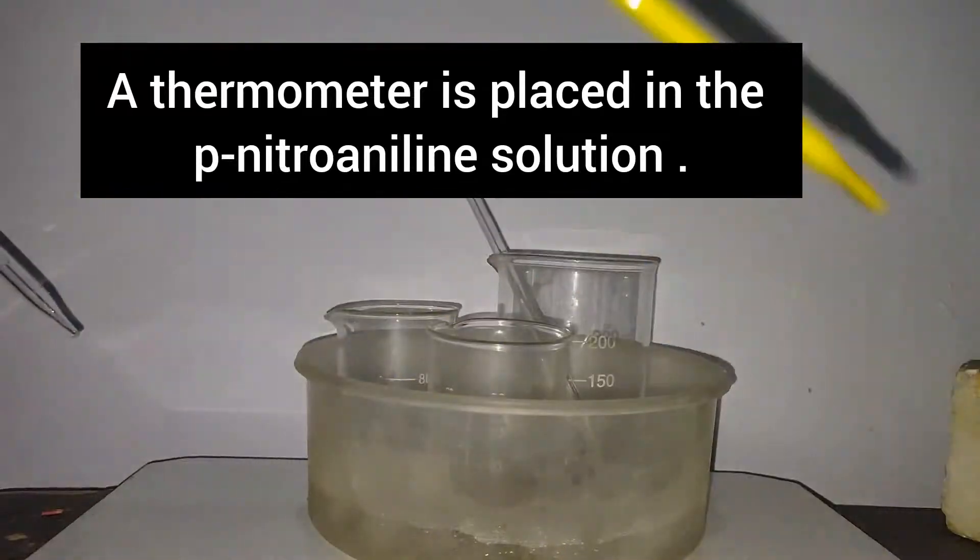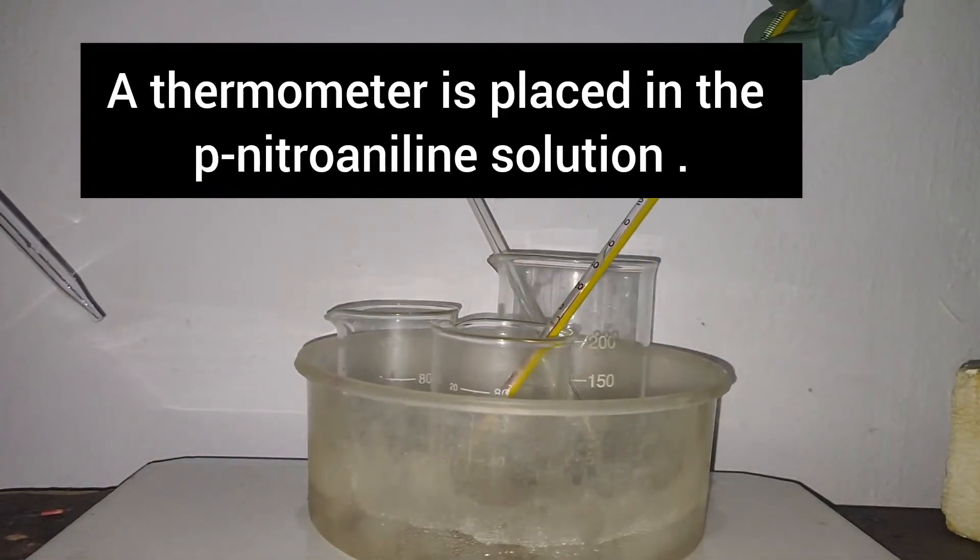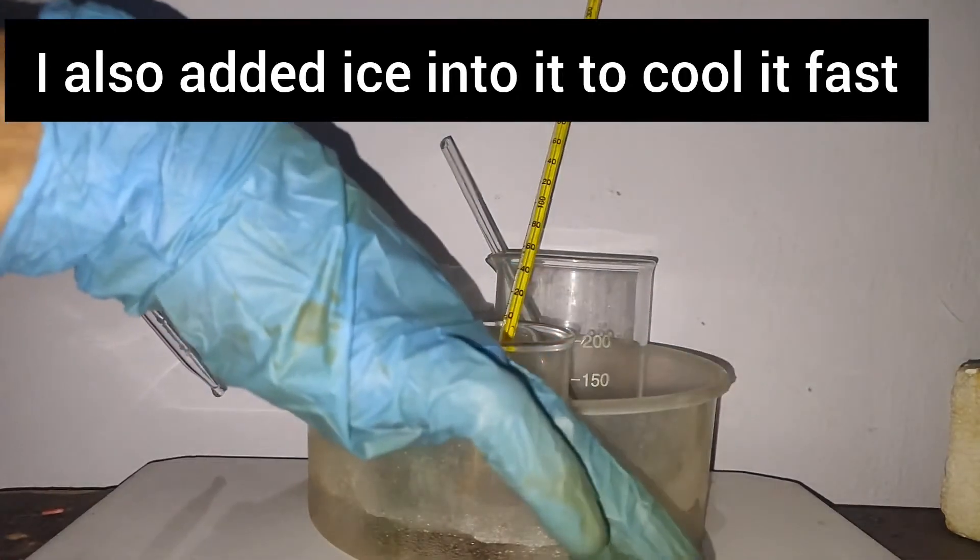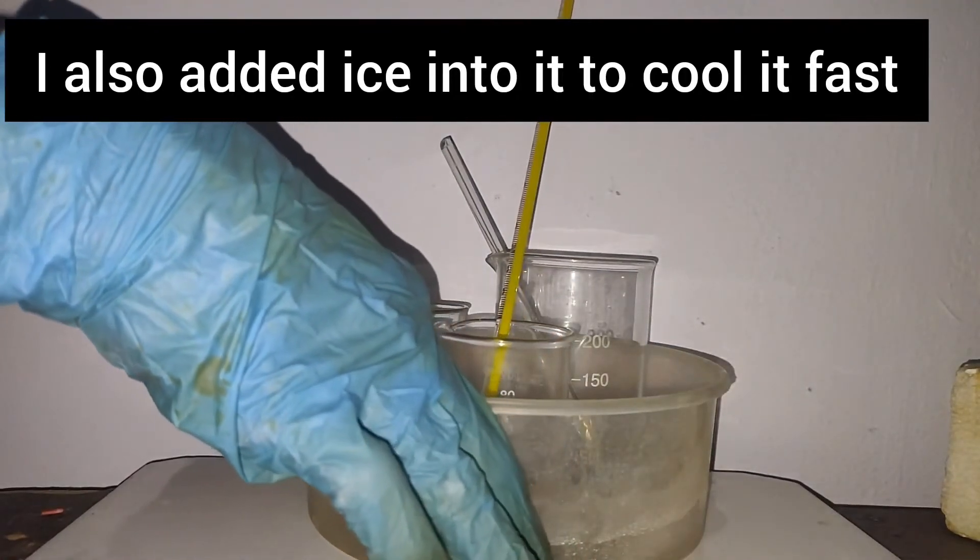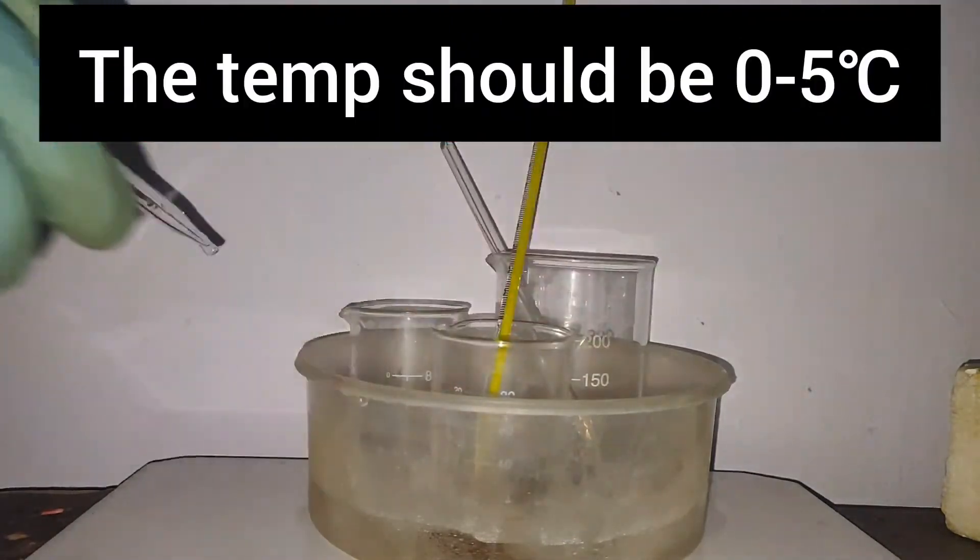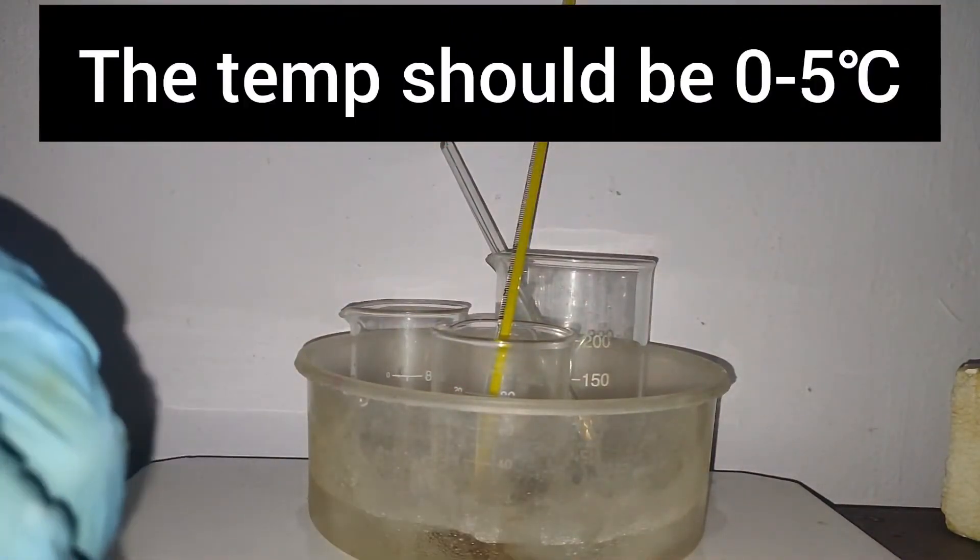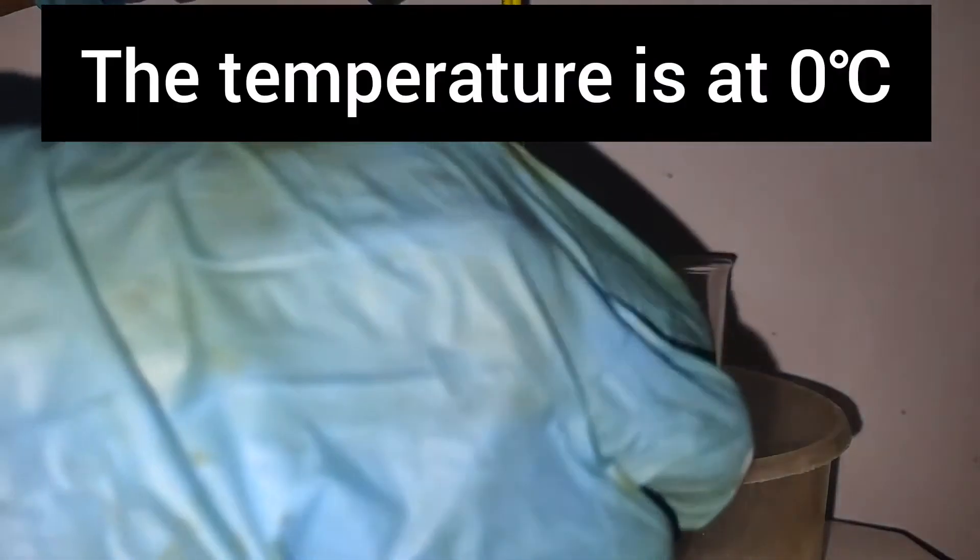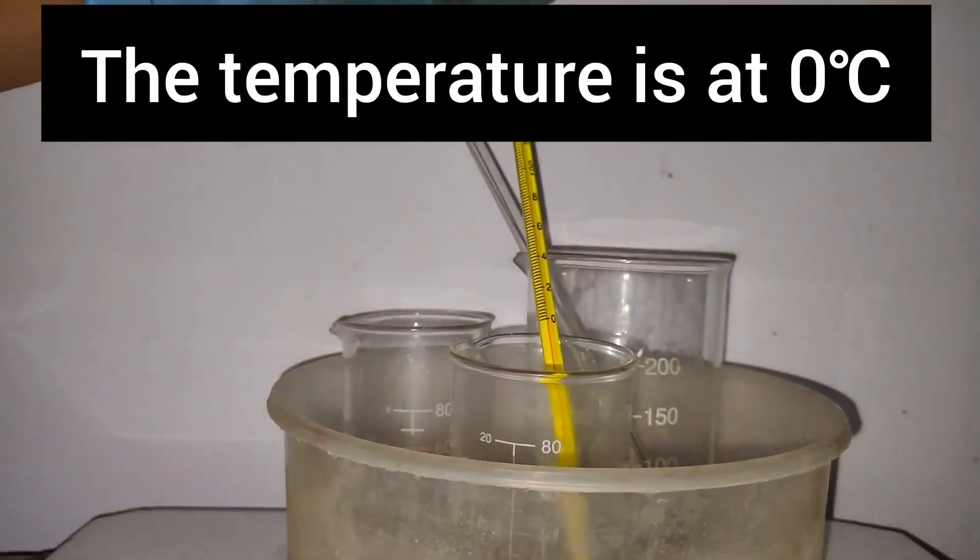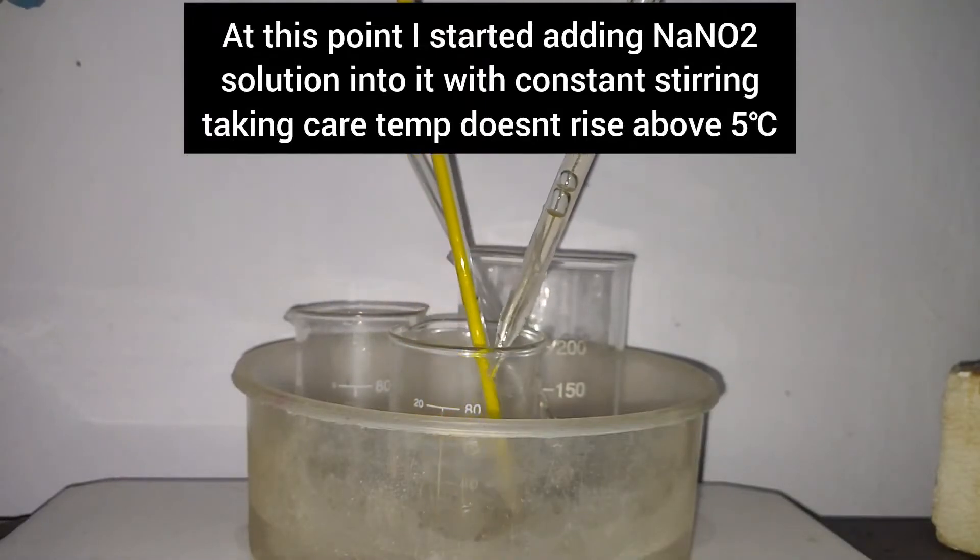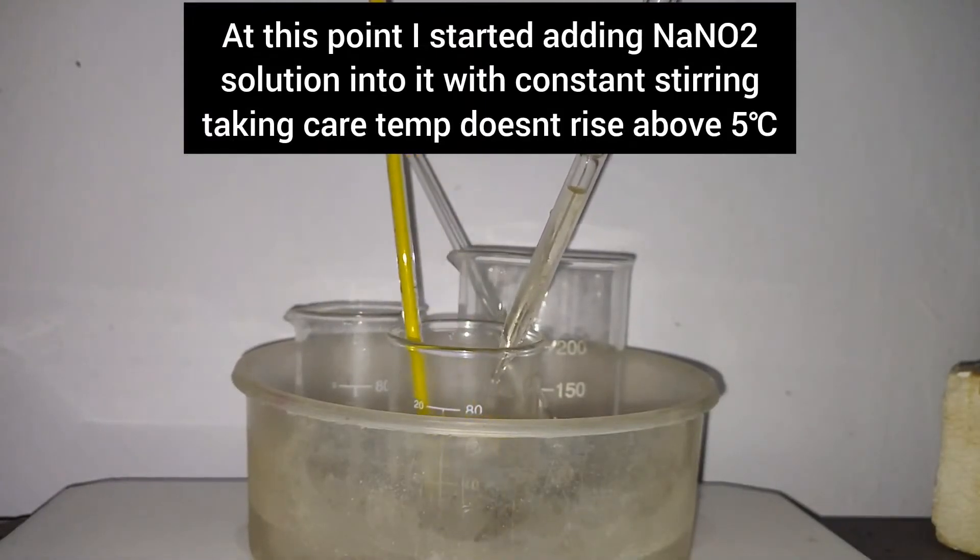A thermometer was placed in the para-nitroaniline solution to monitor its temperature. The temperature was not falling to 0 degrees Celsius, so an ice cube was added inside the beaker. The temperature quickly came down to 0 degrees Celsius. At this point, sodium nitrite solution was added with constant stirring, taking care that temperature does not rise above 5 degrees Celsius.